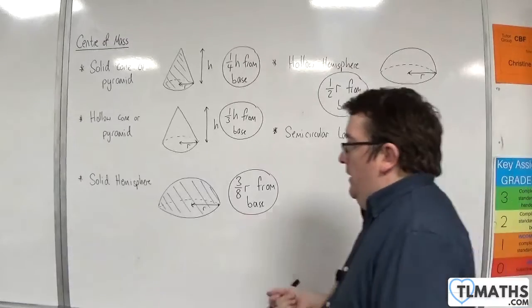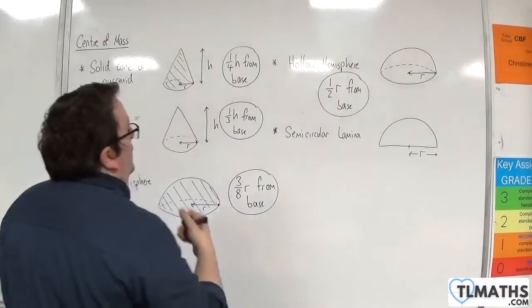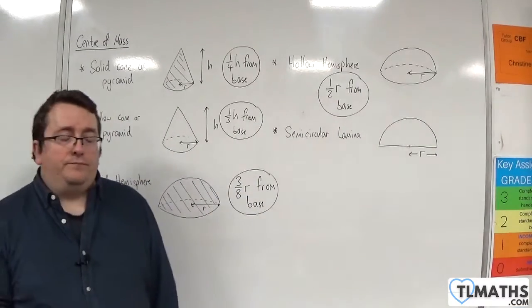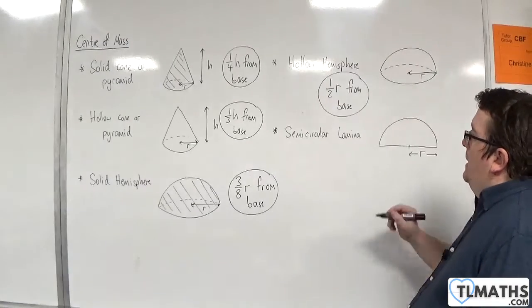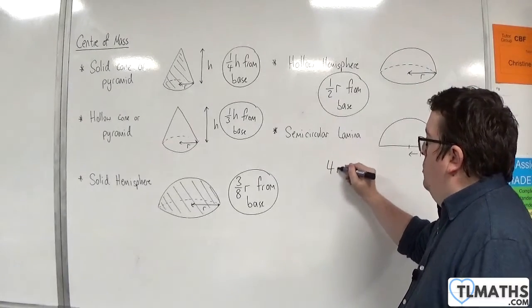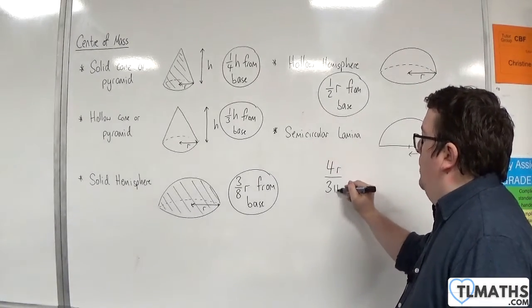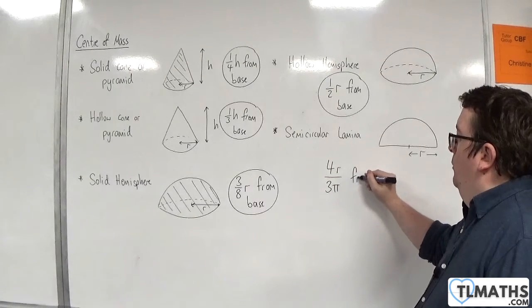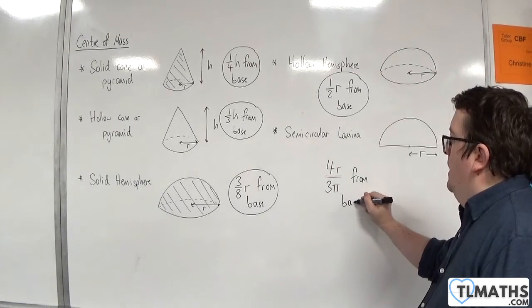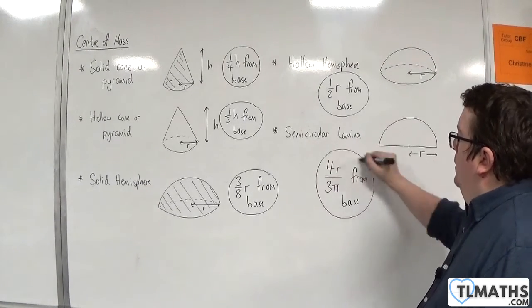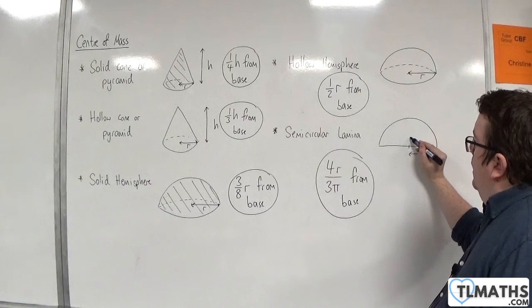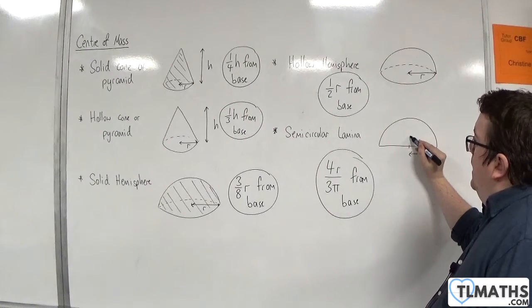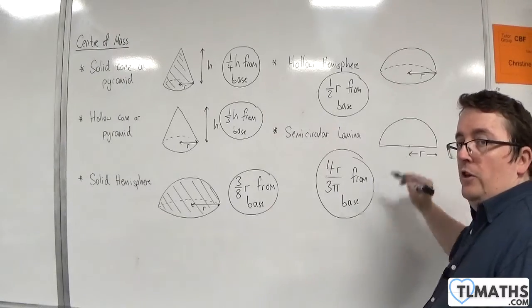And finally, a semicircular lamina. This one isn't so easy to remember. This is 4R over 3 pi from the base. So from that point there, it is 4R over 3 pi until you hit your center of mass.